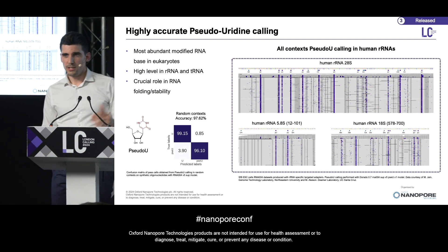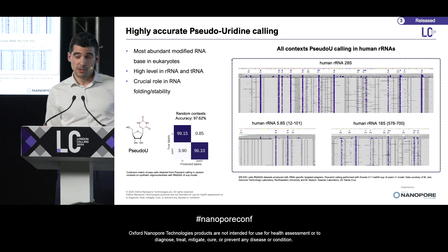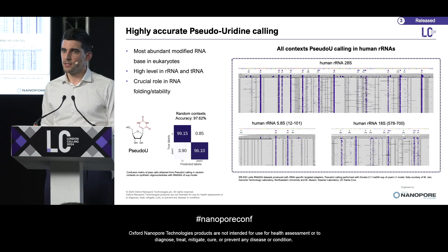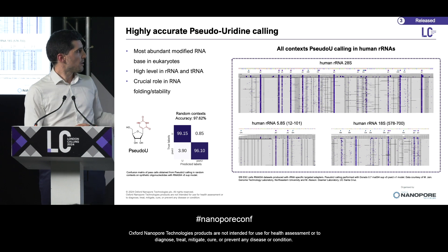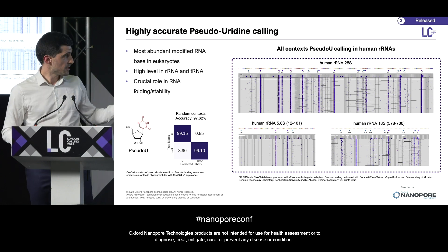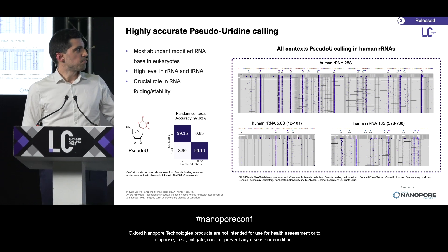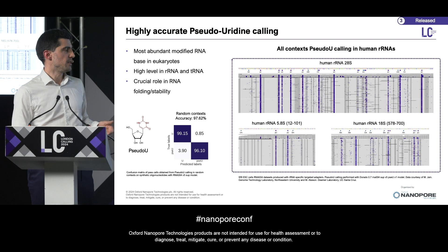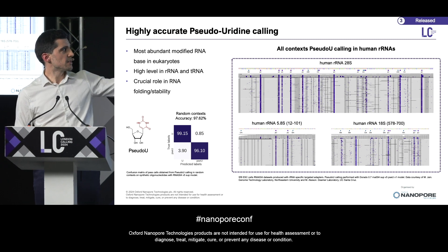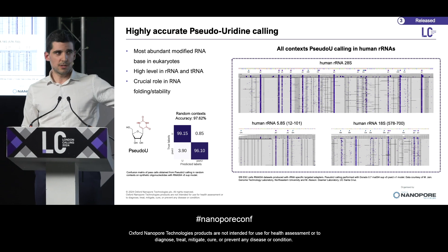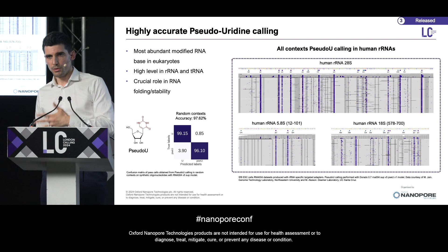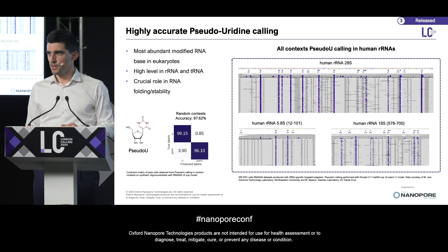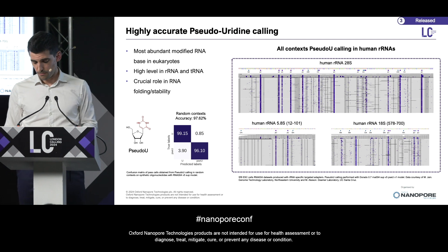The model I'm probably most excited about is the pseudouridine model. This is the most abundant modification in RNAs, due mainly to the fact that it's highly enriched in rRNAs and tRNAs, which are very abundant RNAs. We've also managed to train an all-context model with the same methods, and the model is actually slightly better than the m6A model. Because it's rich in RNA, we tested whether we could see the probabilities lining up at all pseudouridine sites — and you can see on the right panel that it does align really well with annotated pseudouridine sites.